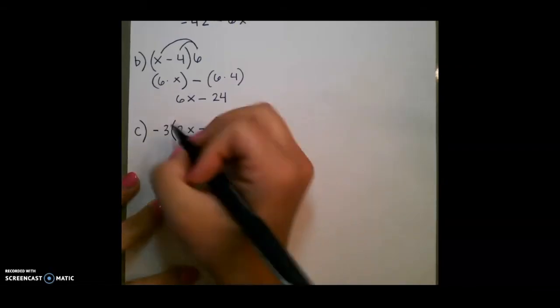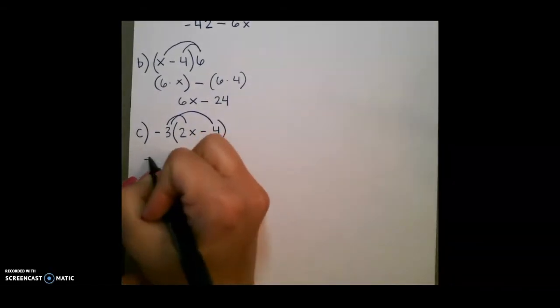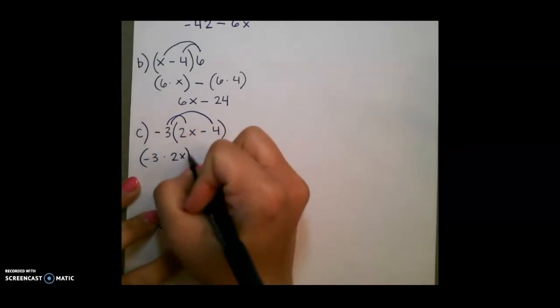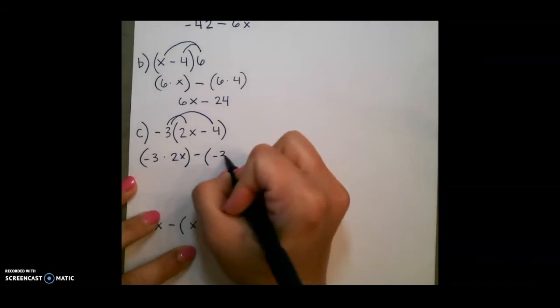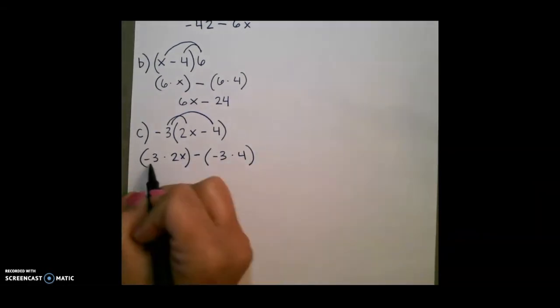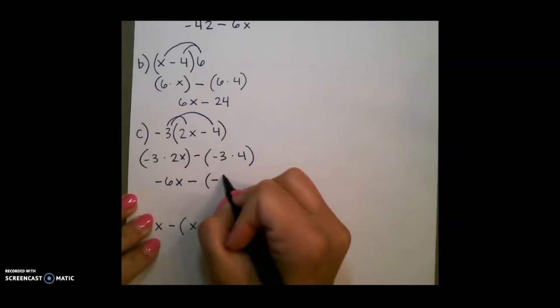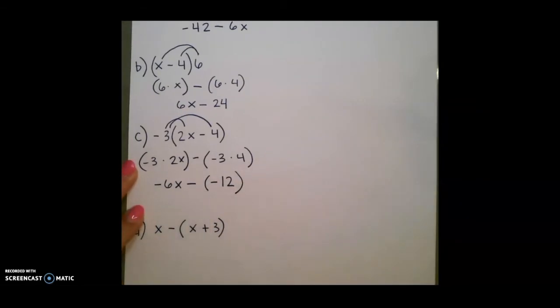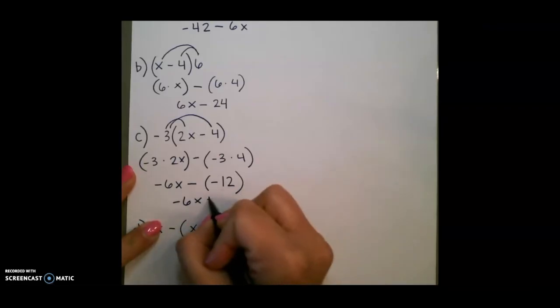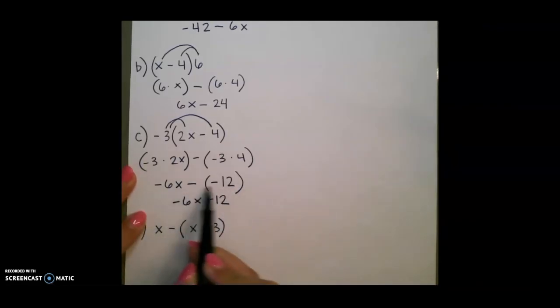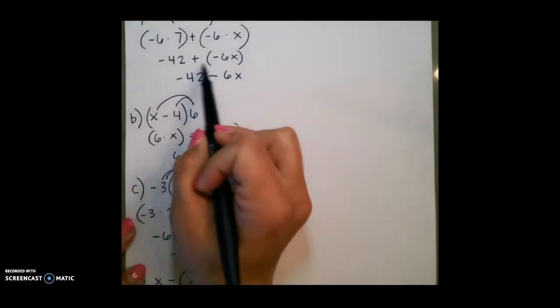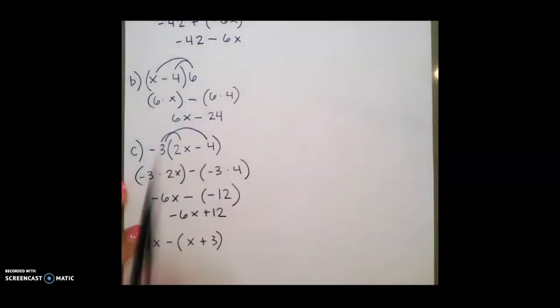Another example: negative 3, parentheses, 2x minus 4. On this one, we have to pay attention to our negative sign and our subtraction sign. So again, we distribute negative 3 times 2x. We have a subtraction sign in the middle, and then negative 3 times 4. Negative 3 times 2x is negative 6x. Subtraction sign — negative 3 times 4 is negative 12. We notice that we have a double sign, so subtracting a negative is the same thing as adding. So this one would be negative 6x plus 12. Pay attention to the signs: when you have a double sign, you always want to switch it to only have one sign.